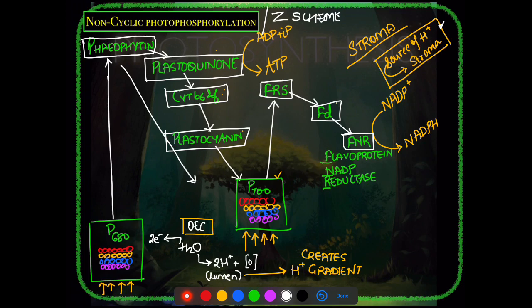In the Z scheme, the downhill movement from PS2 through the electron transport chain represents electrons passing through without being used up — they are simply passed along. At PS1, light re-excites them uphill toward FRS (higher redox potential), then they come back down, and this final downhill process from PS1 leads to the production of NADPH.